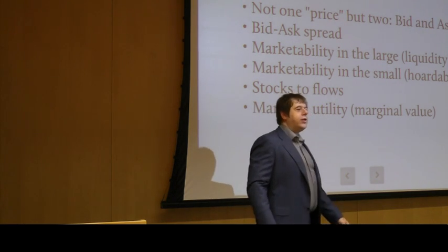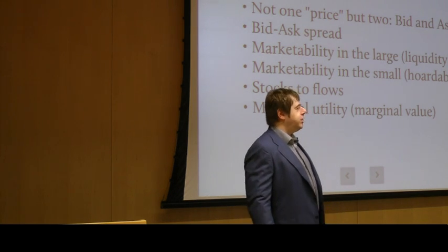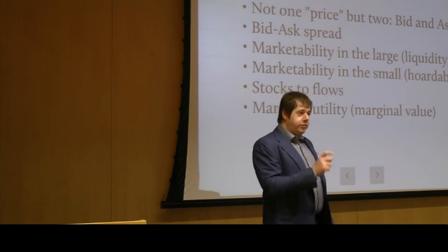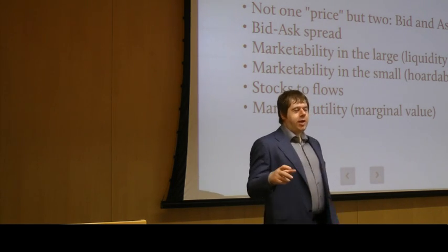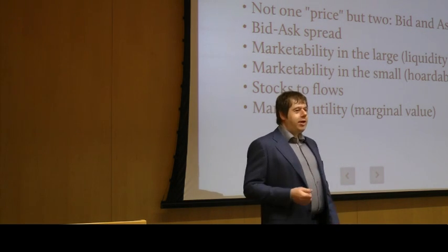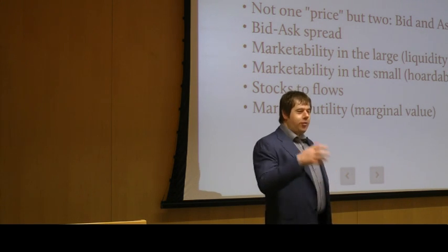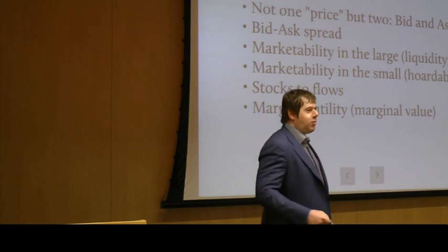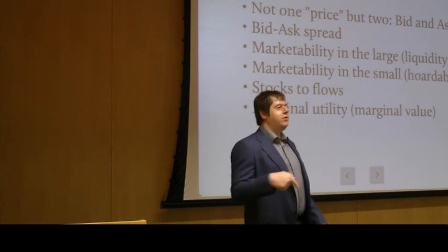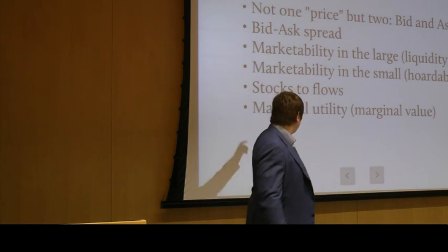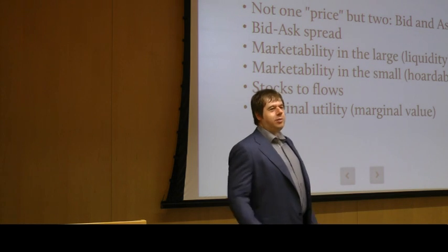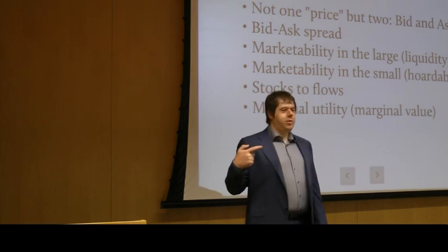Another way of looking at stocks-to-flows is through the concept of marginal utility. Marginal utility refers to how much value you put on the next unit of a good relative to the previous one. If you're walking through the desert dying of thirst and someone has a gallon of water, it's worth any amount of money — it's your life. But by the fourth or fifth gallon, the marginal utility goes to zero — you can't even carry it. The monetary commodity, by contrast, has a marginal utility that either does not decline, or declines so slowly it might as well be a flat line. That's a key distinction between the monetary commodity and any normal commodity.